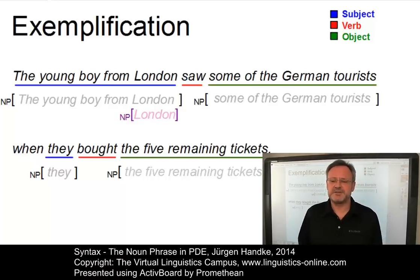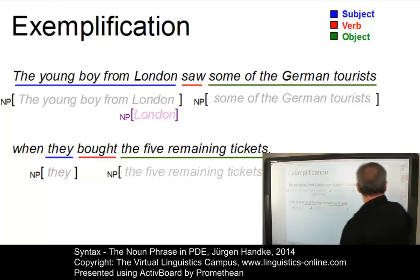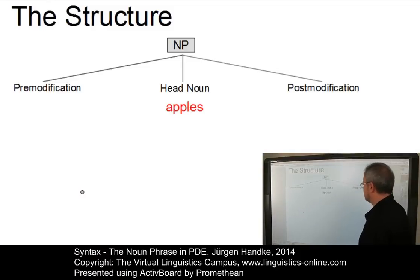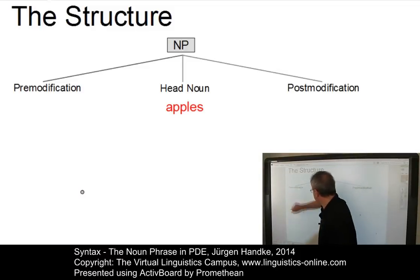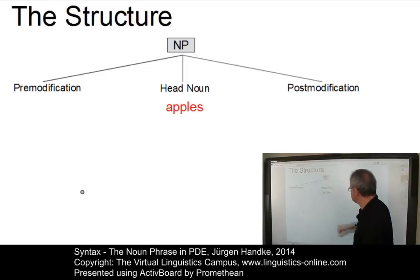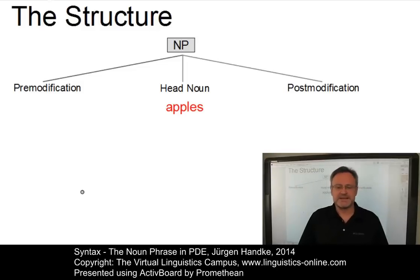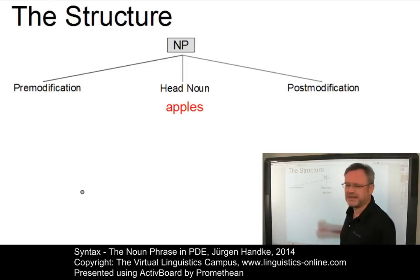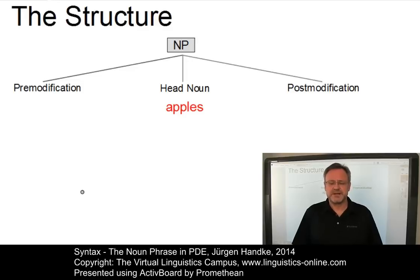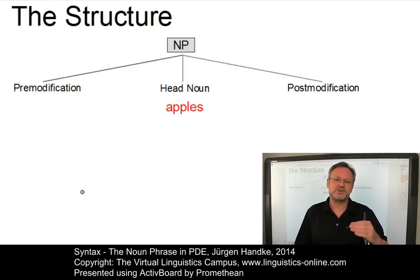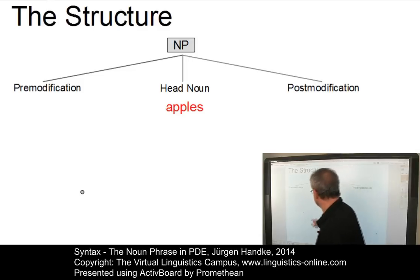All noun phrases have the same structure. They consist of a pre-modification part, a head noun — here 'apples' in its plural form — and a post-modification part. Central to the noun phrase is the head noun. The head may be supplemented by more or less complex pre-modification structures.